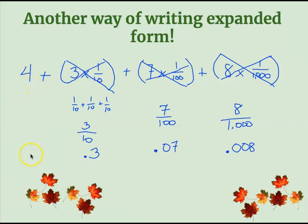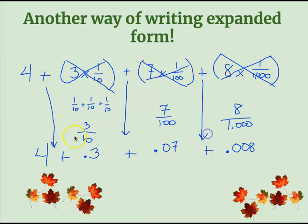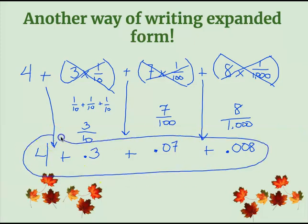We don't really have to do anything to it, but we're going to drop it down here and bring those plus signs down because we haven't used them. Now we have: four plus three tenths plus seven hundredths plus eight thousandths — four and three tenths and seven hundredths and eight thousandths. So this is just a different way of writing things in expanded form. It's not that difficult — you just have to look at it, take a deep breath, and say, 'I can do this.'